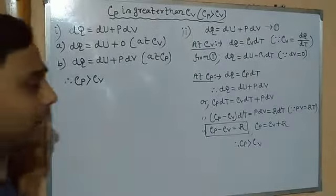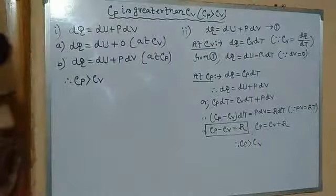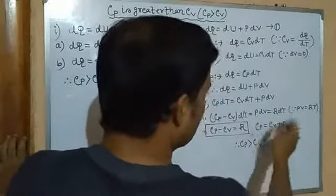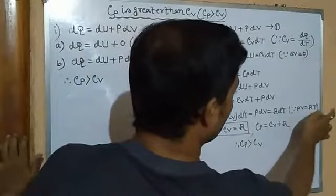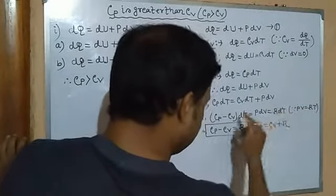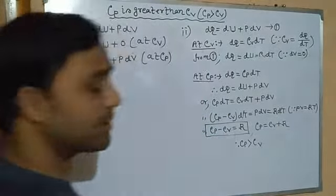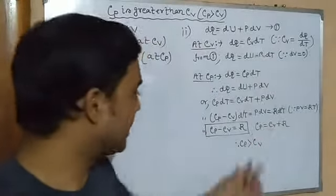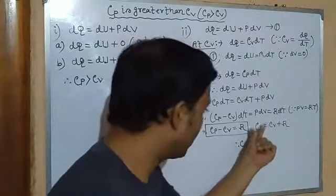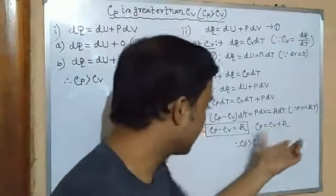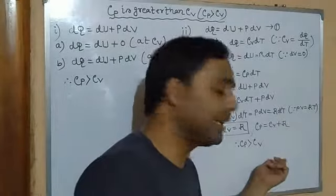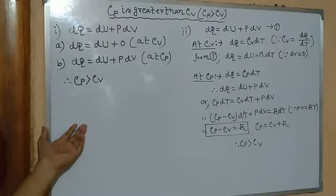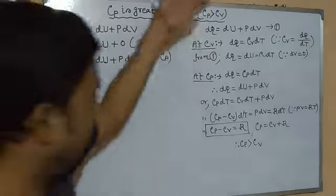Now, PdV = R·dT. Why? Using the ideal gas equation for one mole of gas: PV = RT, so PdV = R·dT. Substituting back: (Cp - Cv)·dT = R·dT. The dT cancels, giving Cp - Cv = R, the molar gas constant. Therefore, Cp = Cv + R, which clearly shows that Cp is greater than Cv.